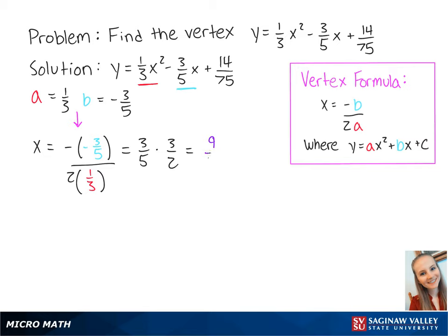Now we plug nine over ten into the original equation, which gives us y equals one-third times nine over ten squared minus three-fifths times nine over ten plus 14 over 75.